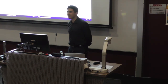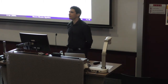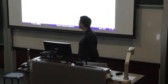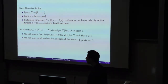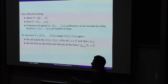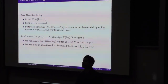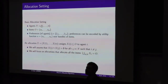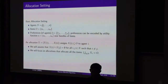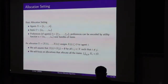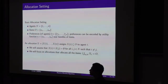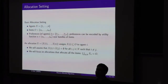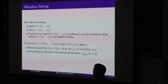The basic allocation setting has three important components. First, it involves a set of agents, denoted by capital N, with n different agents from 1 to N. You also have a set of items denoted by capital O, with m different items to be allocated among the agents.